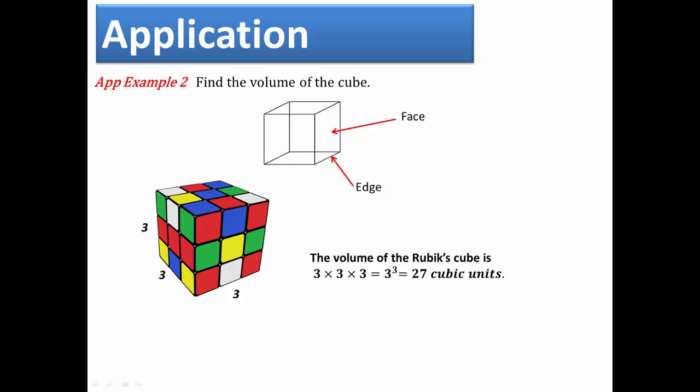Which is the same as 3 raised to the third power, which equals 27 cubic units. That means there are 27 cubes with sides length 1 that make up Rubik's cube.